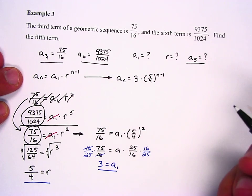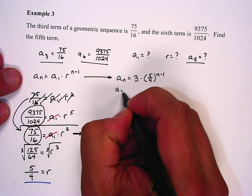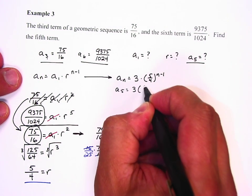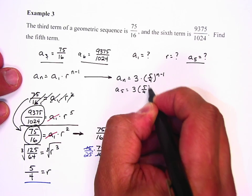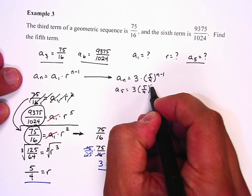Well, my ultimate goal is to find the fifth term, so I'm going to say a sub 5 equals 3 times 5 fourths. Since n is 5, I know that's going to be 4.